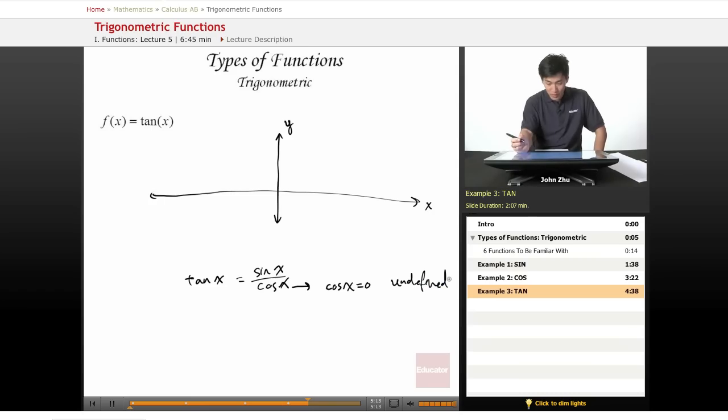So all the points where cosine of x equals 0 happens at π over 2, 3π over 2, 5π over 2, and so on.